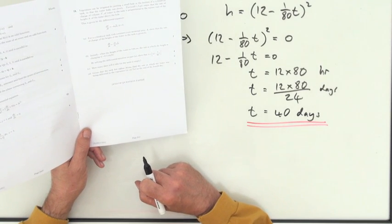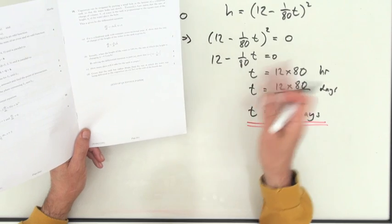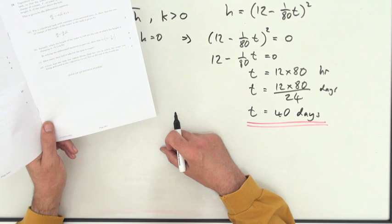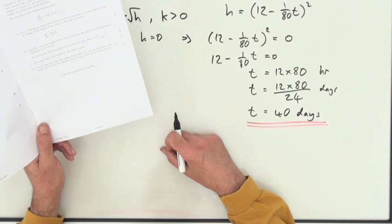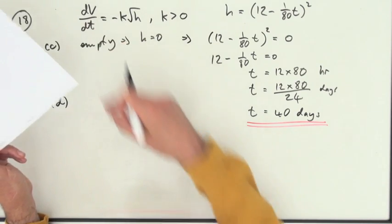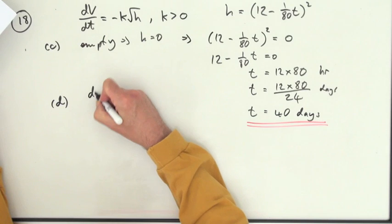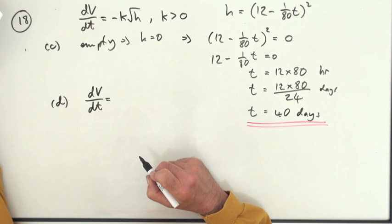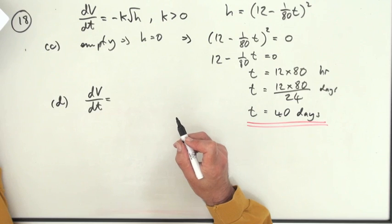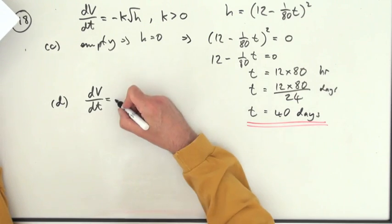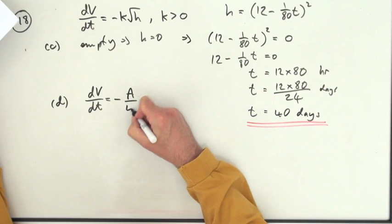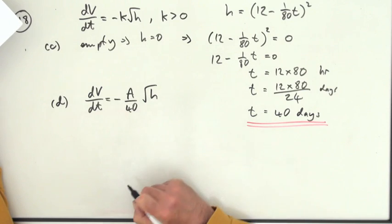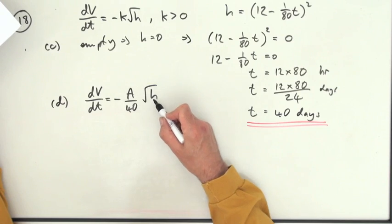Part D. Given that the tank has a radius of 20 centimetres, so that'll be something to do with that cross-sectional area A then, find the rate at which the water was being delivered to the vegetation at the end of the fourth day. The rate, I'm back to dV by dt. So I had dV by dt was negative K root H. But we had that K was equal to A upon 40.